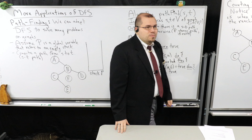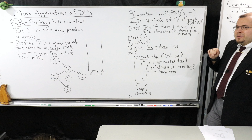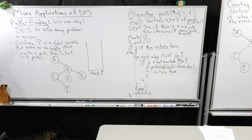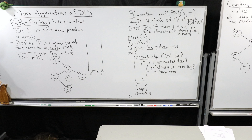The first one I want to talk about is pathfinding. This is one that you will encounter very often in practice, if you're doing things with networks or graphs. Suppose I have some graph here and I would like to find a path from vertex A to vertex E. A path that gets me from S to T is what we call an ST path.